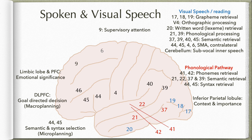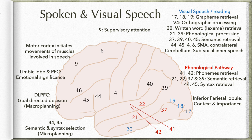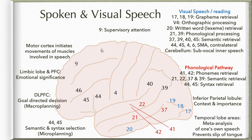Once that is done, this information is shifted to motor cortex area 4, which is adjacent to area 44-45, where the head is represented in the motor homunculus. The motor cortex initiates movements of the muscles involved in speech, sending information down through corticonuclear fibers to reach the larynx, pharynx, tongue, and lips to articulate speech. Also throughout this process, the temporal lobes — areas 20, 21, and 22 — are constantly doing meta-analysis: we are constantly hearing our own speech to keep checking whether what we are saying is correct. This prevents slip of tongue.